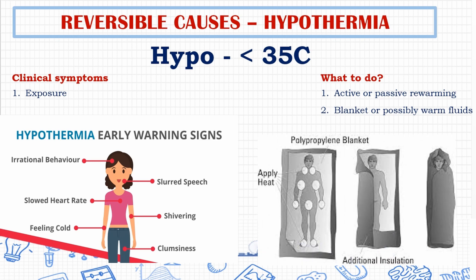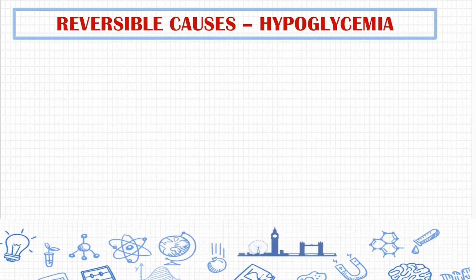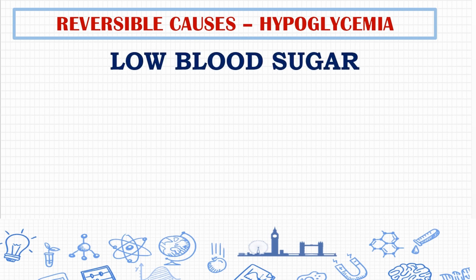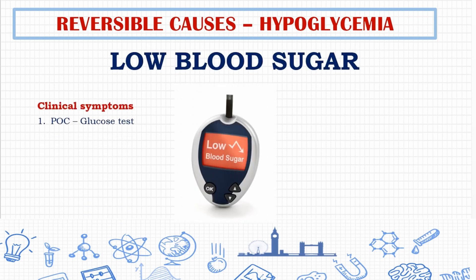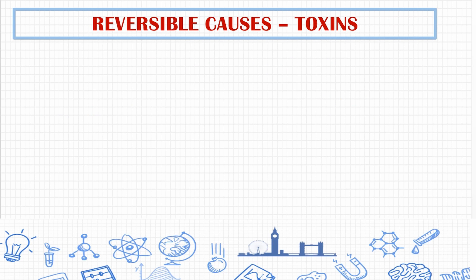The last H is hypoglycemia. If the blood sugar level is below 50 mg/dL or less than 3 mmol/L, start with 50% dextrose as soon as possible.